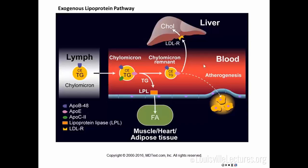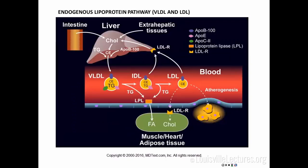The endogenous pathway starts with the liver, which is where much of the circulating cholesterol comes from. Sources of cholesterol include de novo synthesis, cholesterol from the intestine, and cholesterol returning from extrahepatic tissues. The main packaging protein is VLDL, which contains ApoB100 and ApoC2. ApoC2 is needed for lipoprotein lipase to remove triglycerides, producing intermediate-density lipoproteins with more cholesterol. These then become LDL particles, taken up by peripheral tissues through the LDL receptor.